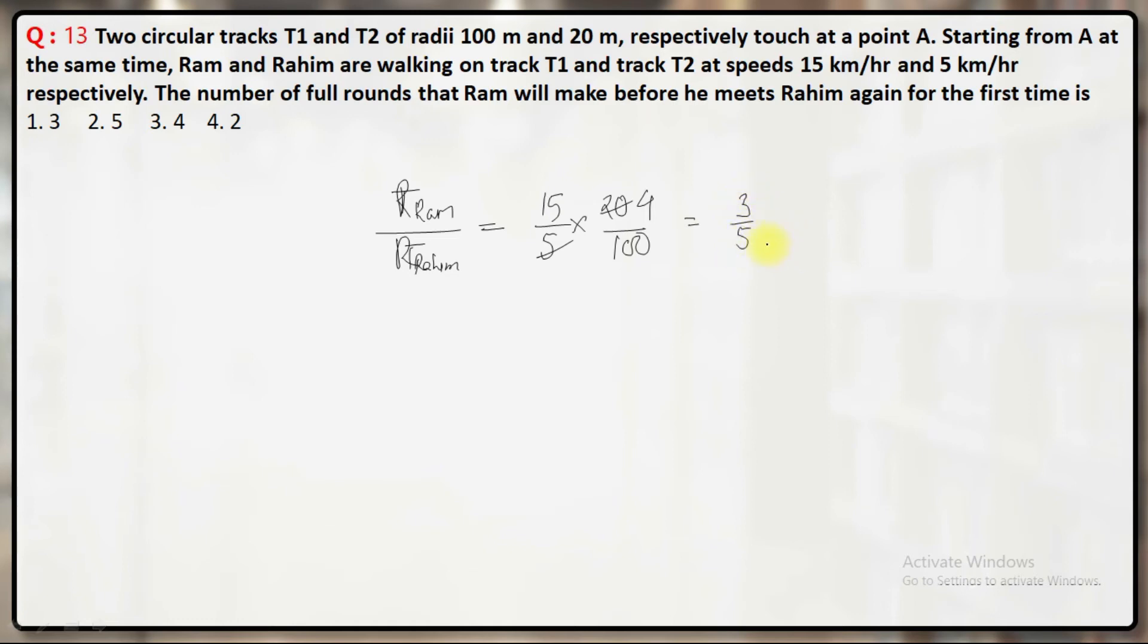What does it mean? By the time Rahim will take 5 rounds, Ram will take 3 rounds. By the time Rahim will take 5 rounds, Ram will take 3 rounds. So my answer is first option.